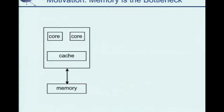Let's first look at the motivation. This is a typical microarchitecture of a processor. There can be multi-cores on chip, and there is main memory attached to the chip. To bridge the speed gap between the core and main memory, we always use the cache. It's really important to leverage the cache to get better performance.